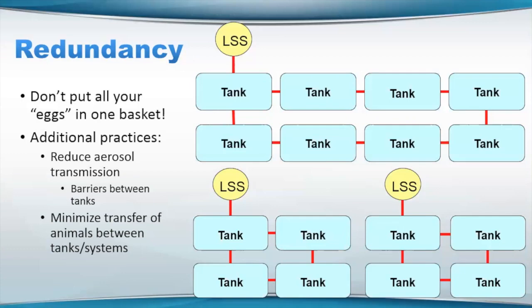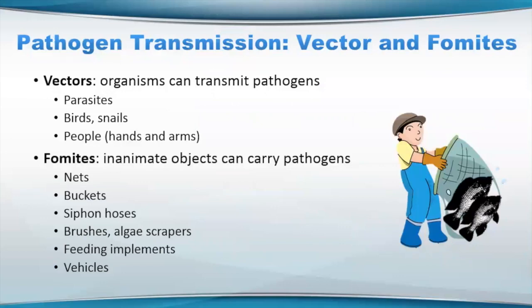Again, redundancy. If one of your pumps goes down, you hopefully will have a backup. Of course things will cost more, but keep that in mind. So let's talk about transmission of pathogens and two terms: vectors and fomites. Vectors are organisms that can transmit pathogens — that includes things like parasites, which can spread other types of organisms from one animal to another. Things like birds and snails are often parts of life cycles that will spread parasites and other organisms to animals. And then of course people will actually be able to spread things on their hands and arms as well.